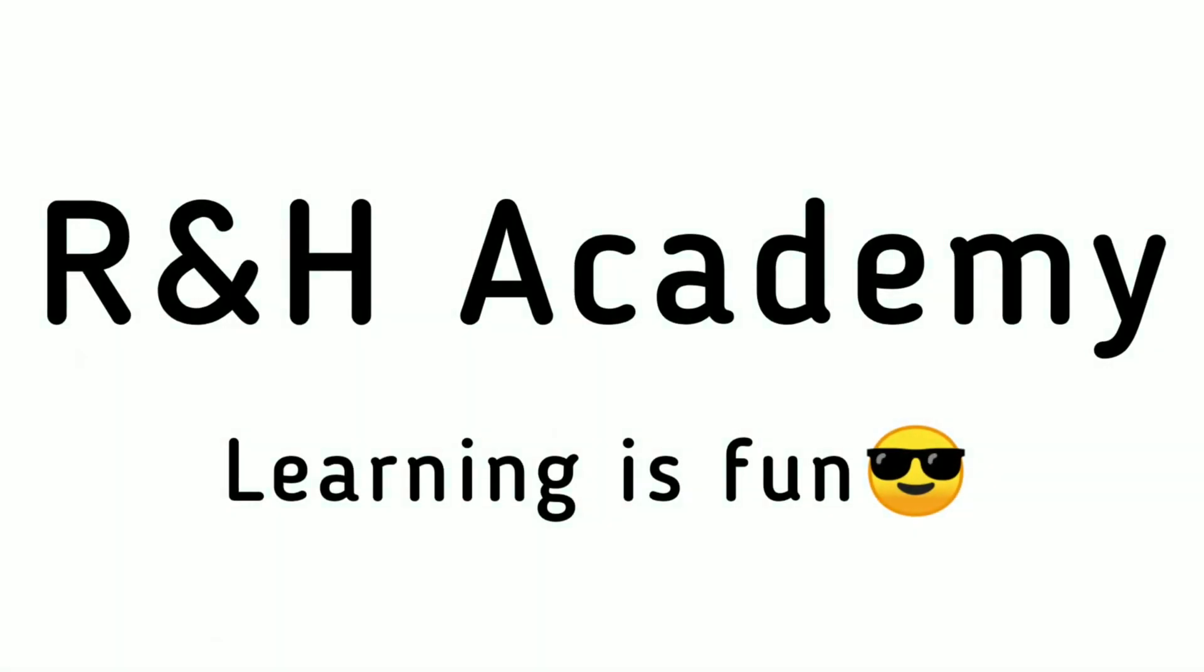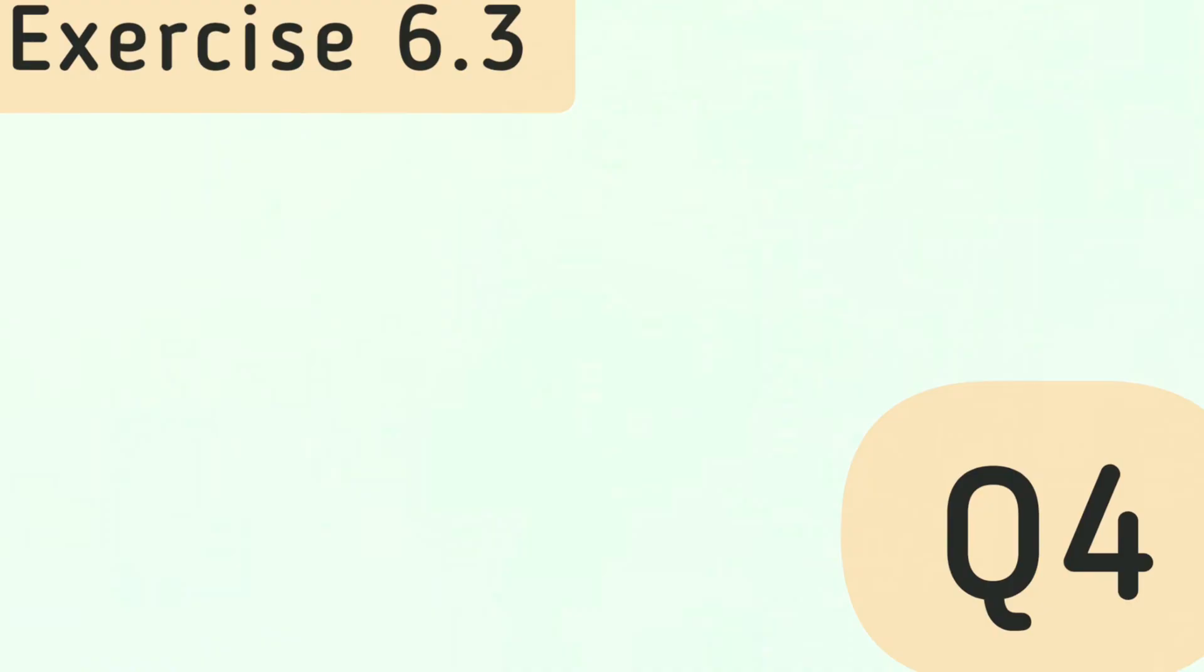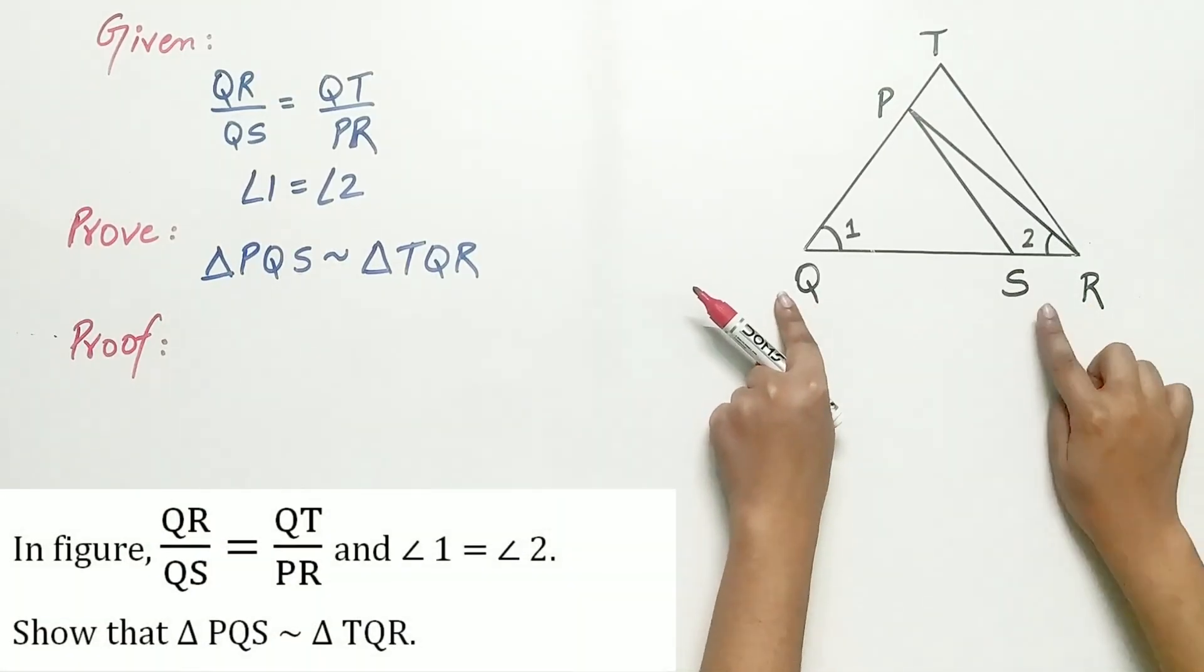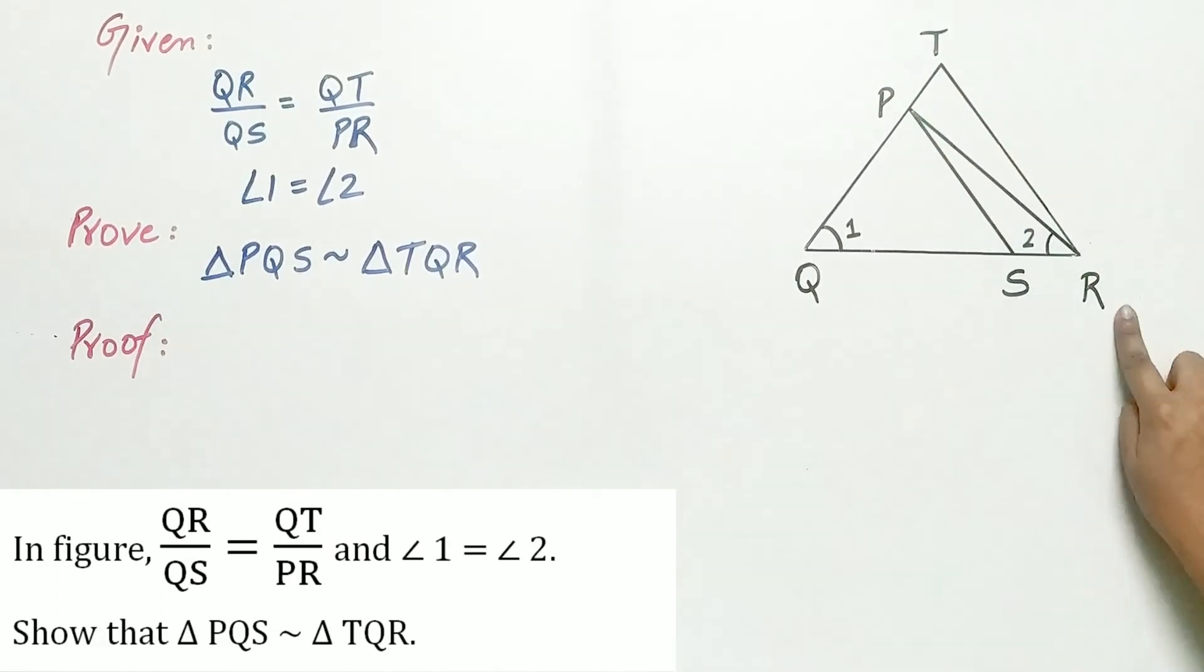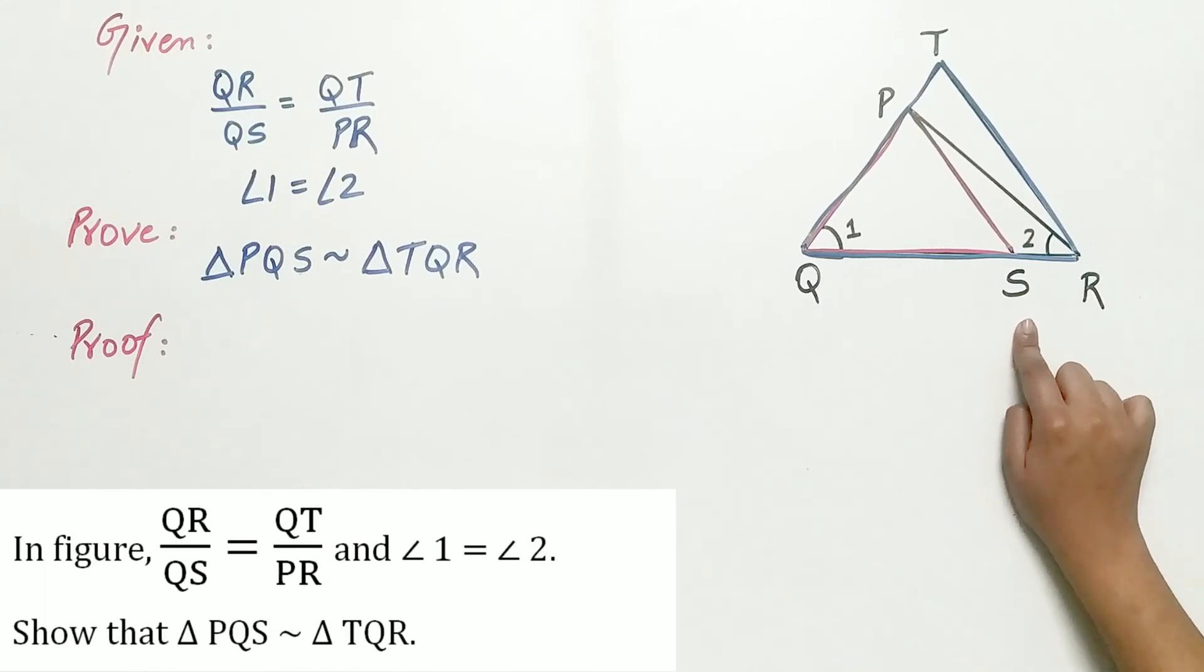Welcome to R&H Academy channel. Question 4 of XI 6.3 says, in figure QR by QS is equal to QT by PR and angle 1 is equal to angle 2. We have to prove that triangle PQS is similar to triangle TQR. Now look carefully.